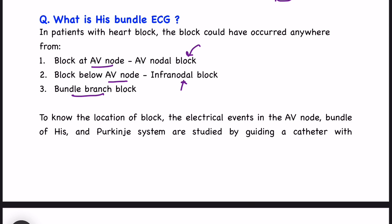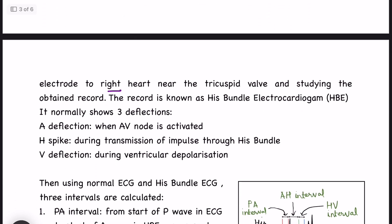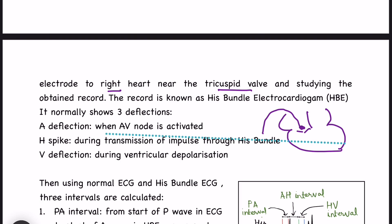Where is the block? How to find out? By looking at the ECG we can identify that some AV block is present, but we cannot identify the site of the block. For that we need to do His bundle ECG. For doing His bundle ECG, we guide a catheter with electrodes to the right heart, near the tricuspid wall. An electrode is guided via the veins and it reaches to the heart.